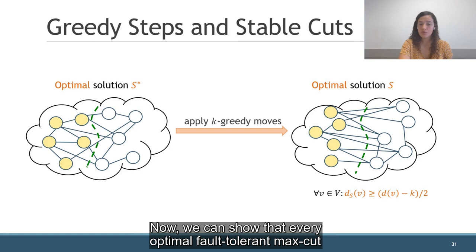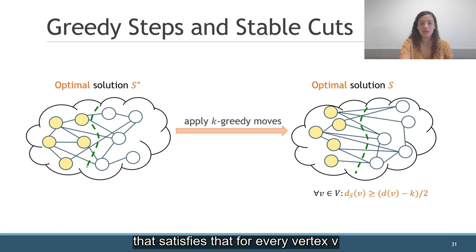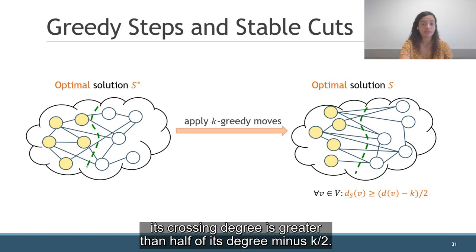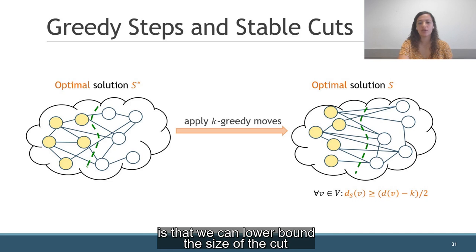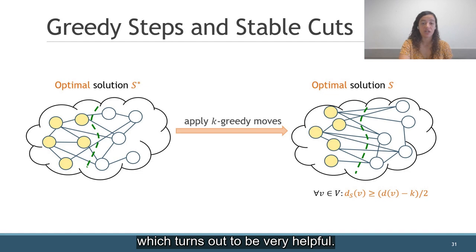Now, we can show that every optimal fault-tolerant MaxCut can be transformed into another optimal cut that satisfies that for every vertex v, its crossing degree is greater than half of its degree minus k over 2. We call this kind of cut a k-stable cut. The good thing about having an optimal k-stable cut is that we can lower bound the size of the cut before the vertices are removed, which turns out to be very helpful.